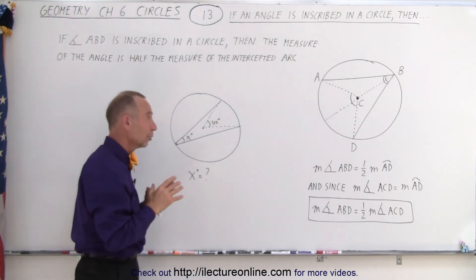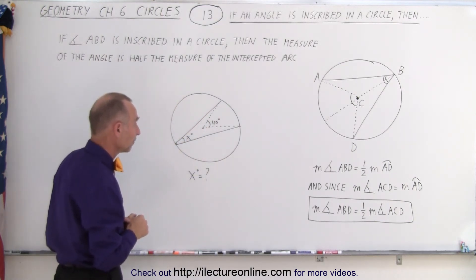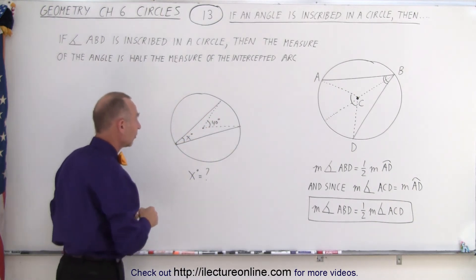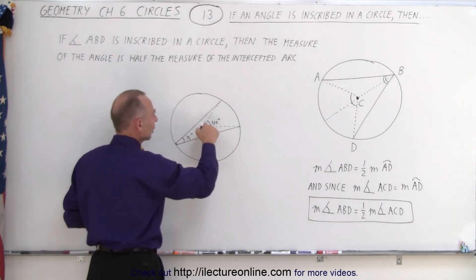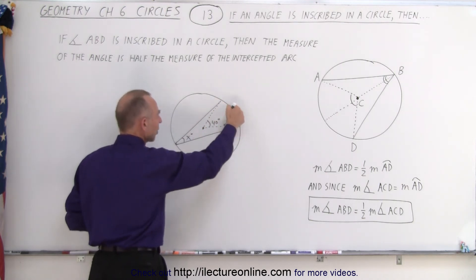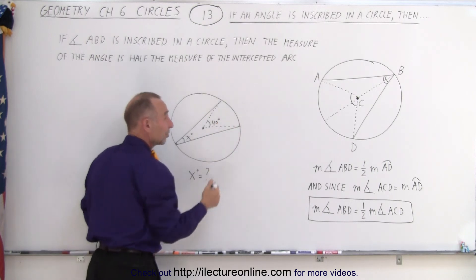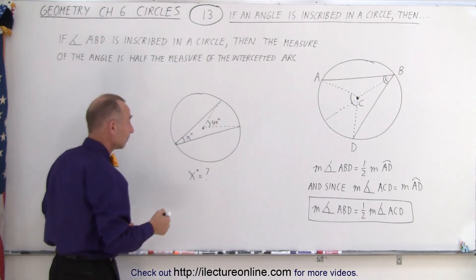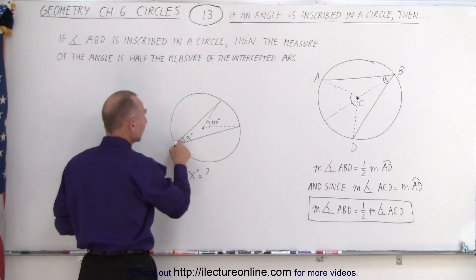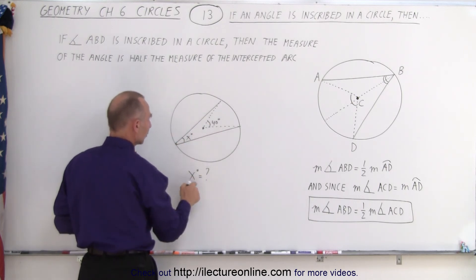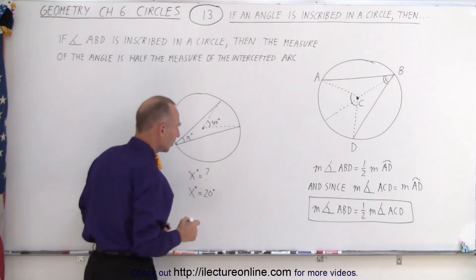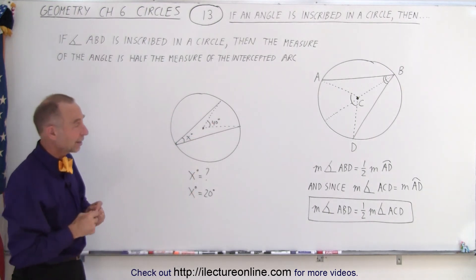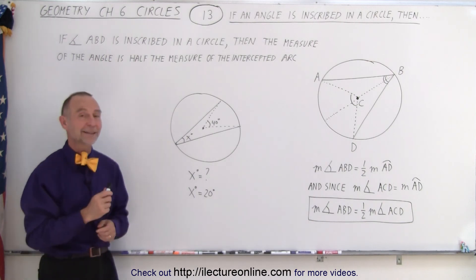A really interesting and useful theorem to remember. Here's a quick example: if this is the center of the circle and we're told that this angle right here is 40 degrees, that means the measure of the intercepted arc is 40 degrees, or the equivalent in radians. Then we know this inscribed angle must be half that angle, so x degrees is equal to 20 degrees — exactly half. It's as simple as that, and that is how it's done.